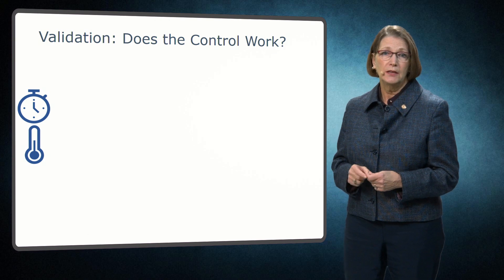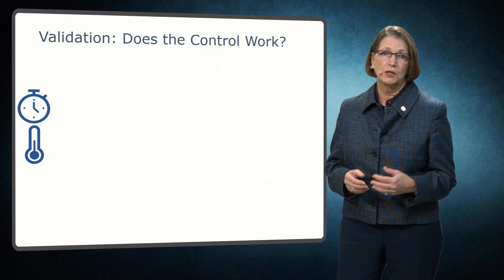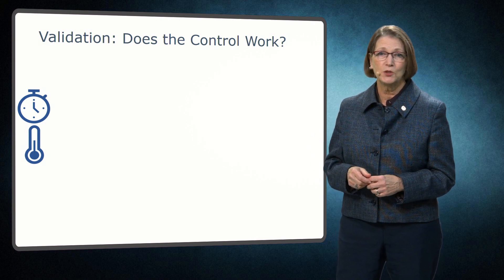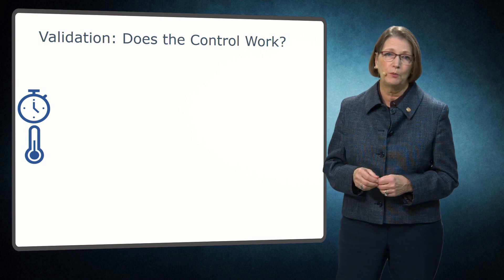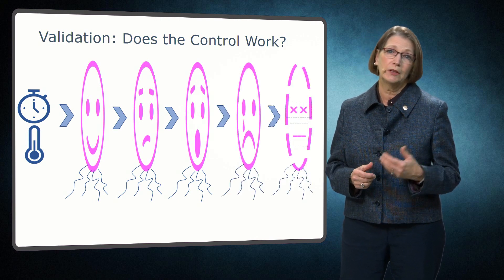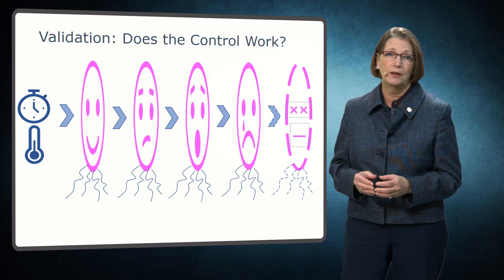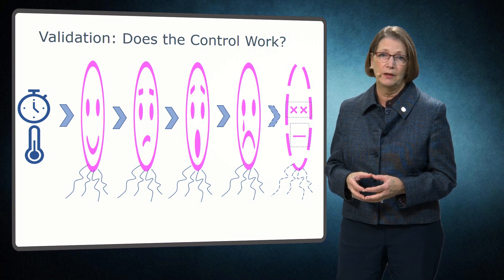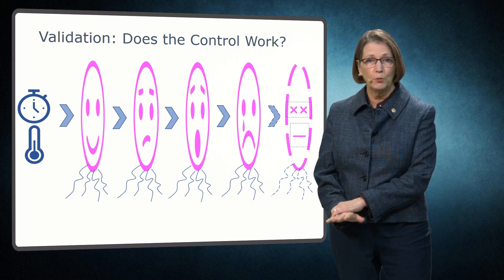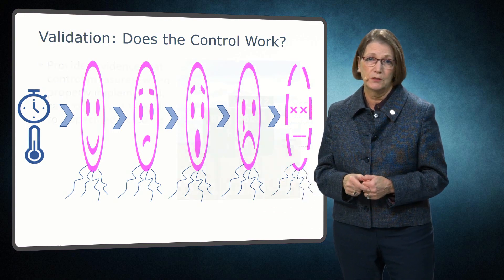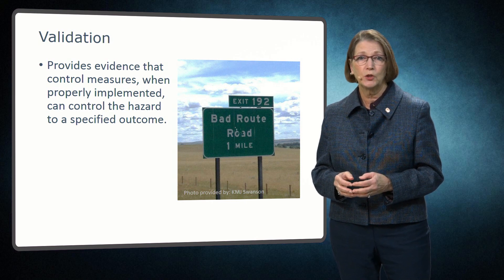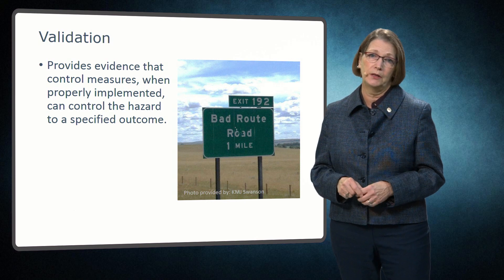To determine this, scientists and engineers conduct studies, such as cooking to a certain temperature and for a certain time, to obtain evidence that a process or treatment will reliably destroy specific pathogens of concern. As the temperature of a product increases with time, the initially happy bacteria become stressed and are ultimately inactivated to a specified outcome in a properly validated process. The specific treatment varies depending upon the process, the food, and a number of other factors. Because of this, proper validation is essential to determine critical factors that ensure a food safety plan can actually control the identified hazard.